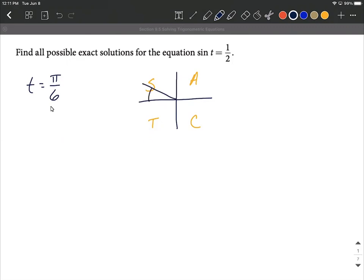So that reference angle, always drawn to the x axis, is drawn in like that. And then we want to calculate what angle would wrap around into the second quadrant that would have pi over six as a reference angle.